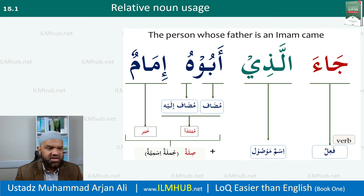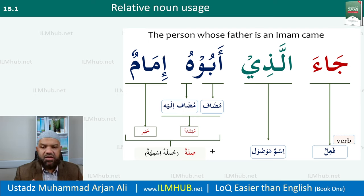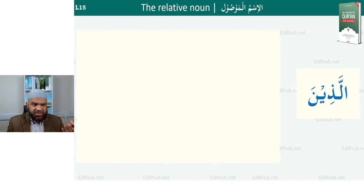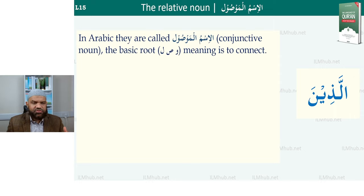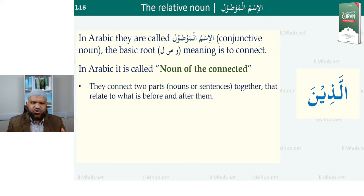Looking at the example: 'jaa'a' means he came. 'Jaa'a alladhi' — who came? So 'alladhi' is your ism mawsool, and the verb 'jaa'a' is your fi'lun. 'Abuhu' is mudaf mudaf ilayhi. 'Imamun' is your khabar, so 'abuhu' becomes the mubtada and 'imamun' becomes the khabar. We have a jumlah ismiya. All of that connects back to 'alladhi', and together it is the doer of the verb — the one whose father is an imam. Al-ladhina means 'those who' — it's the masculine plural form. They are literally nouns of the connected, and they connect two parts together.